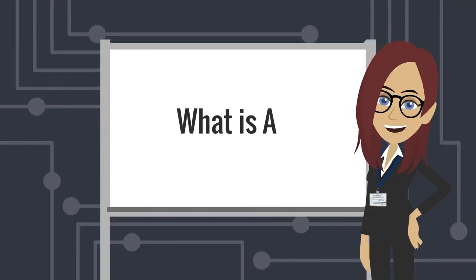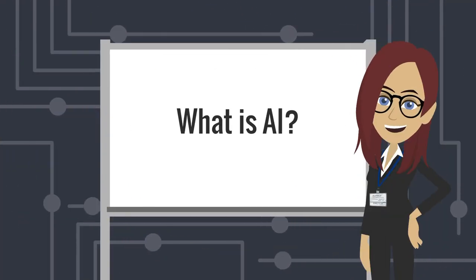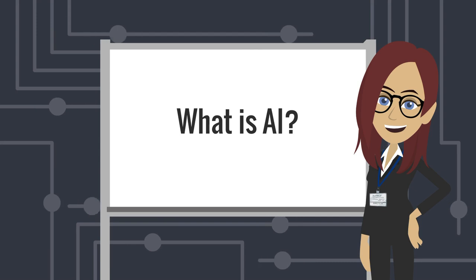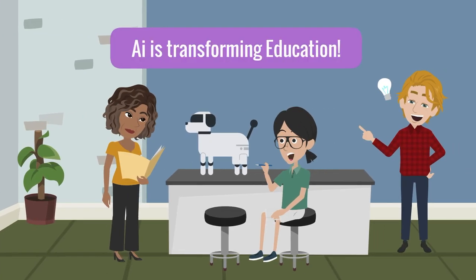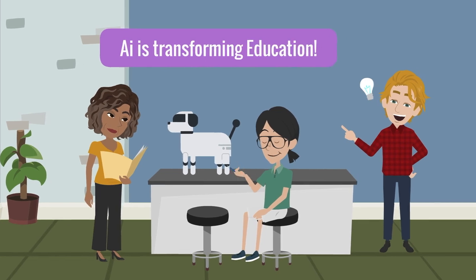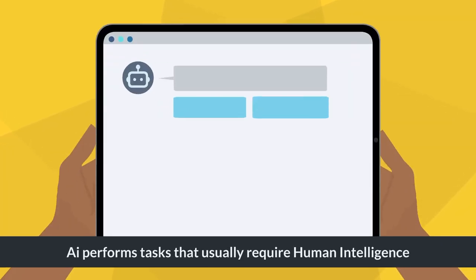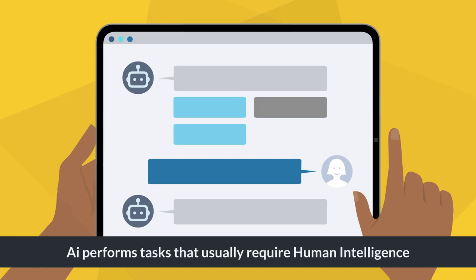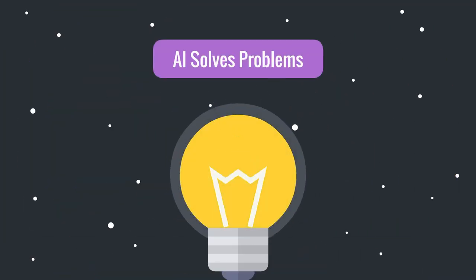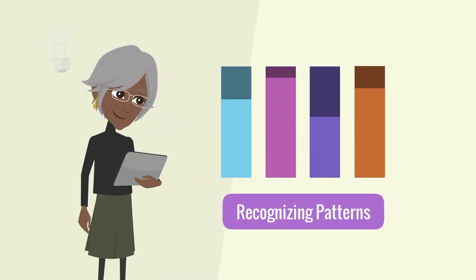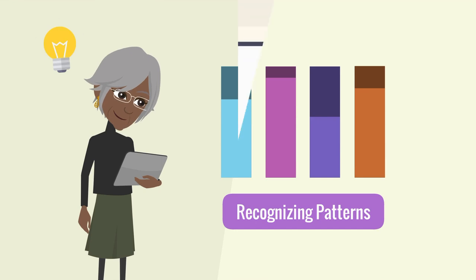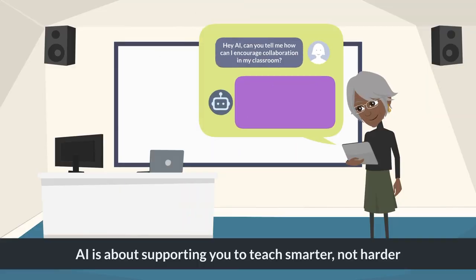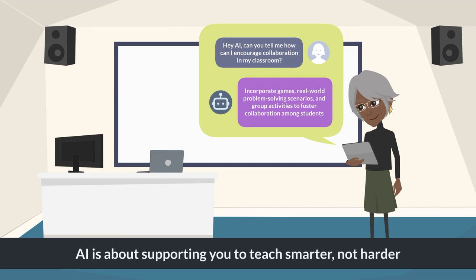Welcome to our AI series for teachers. Today let's uncover the world of artificial intelligence, or AI, and how it's transforming education in exciting ways. AI refers to computer systems designed to perform tasks that usually require human intelligence, such as problem solving, recognizing patterns and making decisions. In education, AI isn't about replacing teachers — it's about supporting you to teach smarter, not harder.